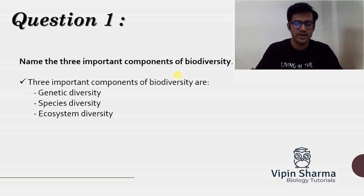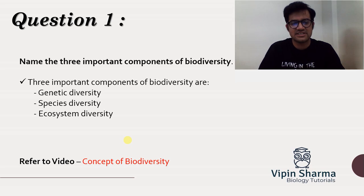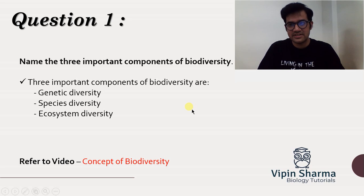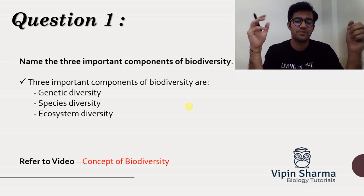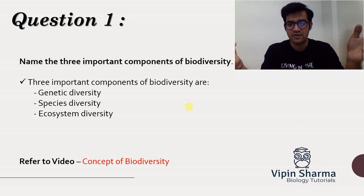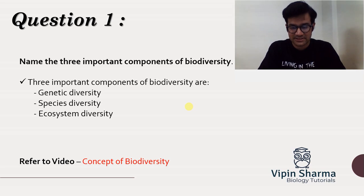The answer is pretty straightforward and we have already discussed this in the concept of biodiversity video. The components are basically genetic diversity, species diversity, and ecosystem diversity. Genetic diversity is the variety existing between genes — I am a different individual, you are a different individual, with different sets of genes. The variety existing between individuals of the same species is called genetic diversity. Species diversity is the diversity existing between various species, for example cat, dog, insects, butterflies, Homo sapiens — all different species.